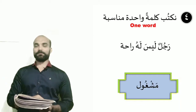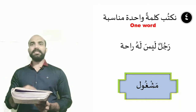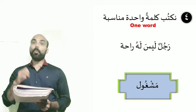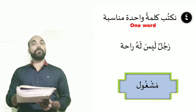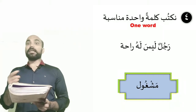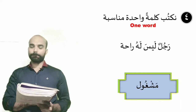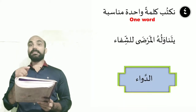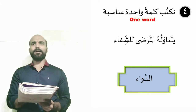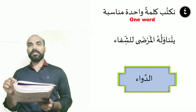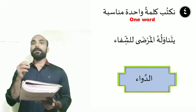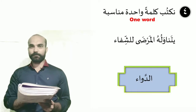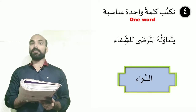Number two: Rajulun laisa lahu raha — a man who has no rest. What can we say about him? Busy man — mashhool. Actually, this word is not in the chapter directly, but we understand from the chapter why a patient cannot exercise. Because he is busy — mashhool, musha'allikum bil-amal. Number three: Yatanaveluhu al-maradha — maradha, jam'u maridh, meaning patients. Patients take that for their health recovery. The answer is medicine — dawah.